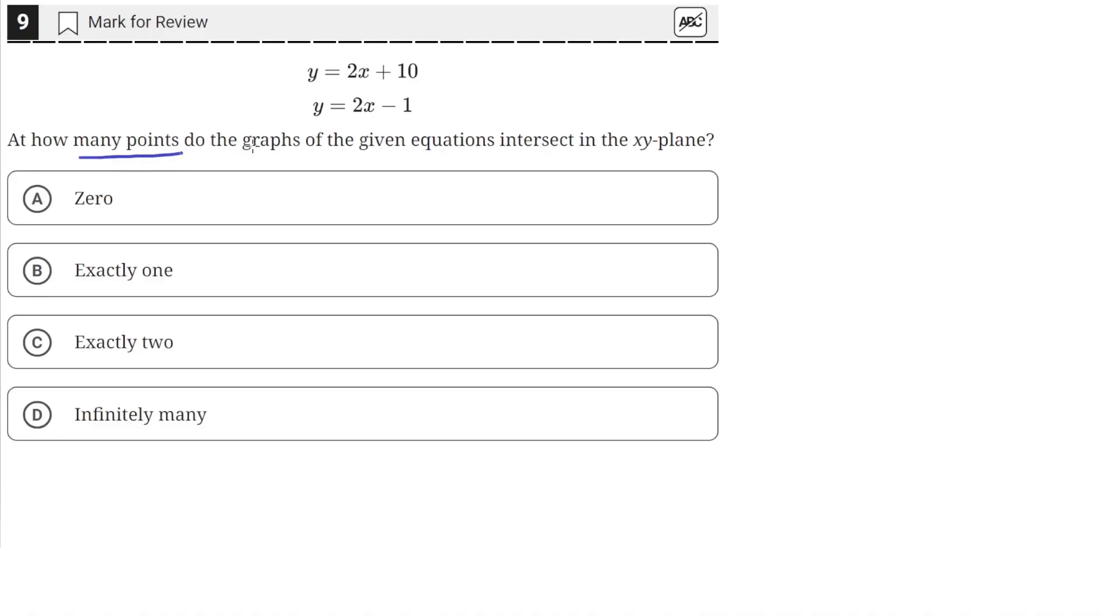At how many points do the graphs of the given equations intersect in the x-y plane? We're given these two equations of these two lines, and we can graph them to see how many points they would intersect at.